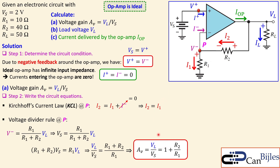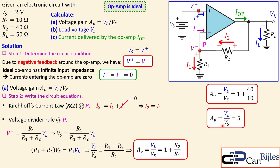Substituting the values — R2 = 40 ohms and R1 = 10 ohms — we get 1 + 40/10 = 1 + 4 = 5. So the voltage gain for question (a) is +5. Compare this to the inverting amplifier example where we got −4; here the result is positive, confirming non-inverting operation.